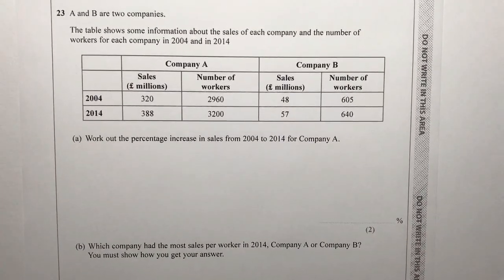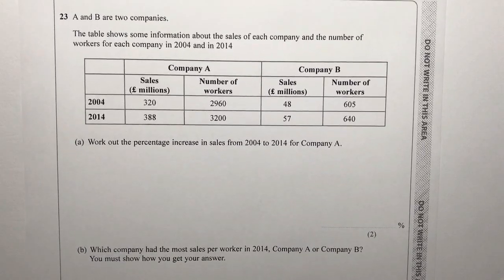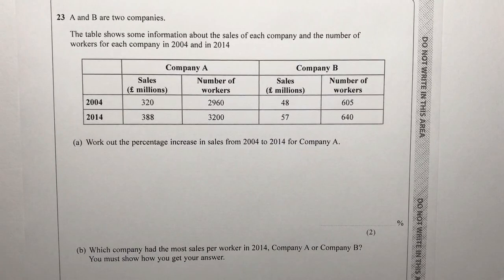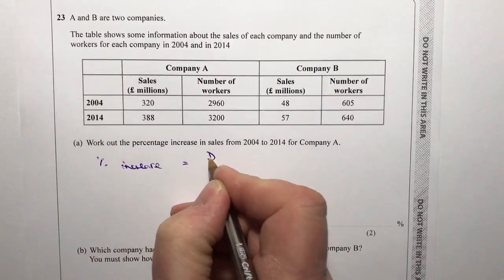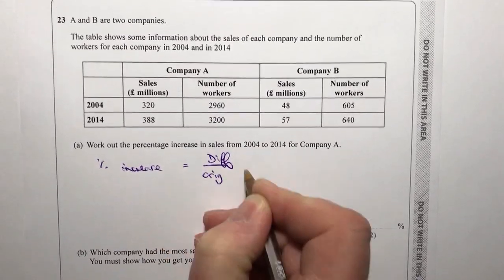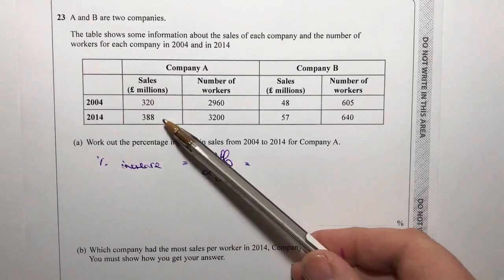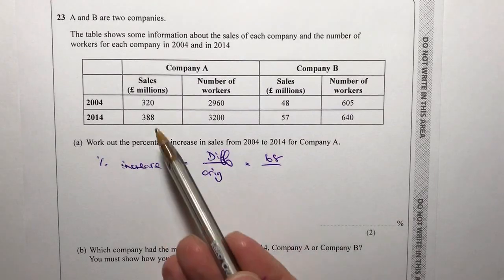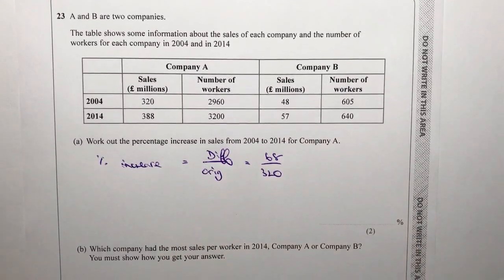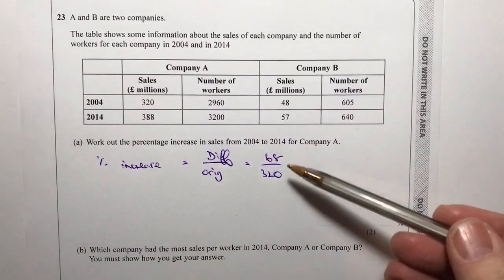Let's look at question number 23, which is about companies A and B — the last question in this paper. We're going to work out the percentage increase in sales from 2004 to 2014 for company A. This is a formula you need to remember: percentage increase equals the difference over the original. The difference in sales is 388 minus 320, which equals 68. The original is 320 — that's where they started from.